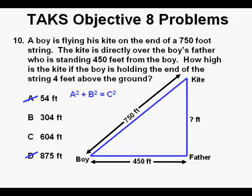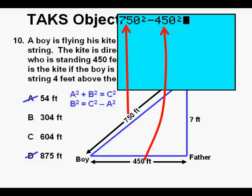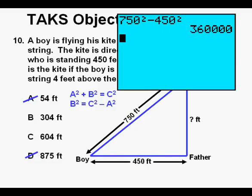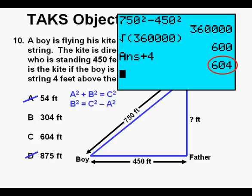But since we're finding one of the legs of the triangle we use the version using, if you have the A and C and need to find the B, then you take A squared and subtract it from C squared. So that makes 750 squared minus 450 squared, and so B squared is 360,000. To find B, we take the square root of 360,000. We press Enter, we get 600 feet. Remember that the boy was holding the string 4 feet above the ground? We have to add that as well, and we get 604 feet. And this is the same distance found in answer C. And we circle our correct answer C.